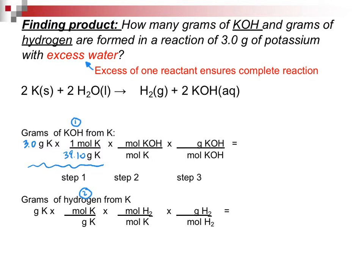Now we have moles of potassium. As I look at the balanced chemical equation for step two, I see the stoichiometric coefficient of two for potassium and I see the stoichiometric coefficient of two for potassium hydroxide. That's our mole ratio from the balanced chemical equation.